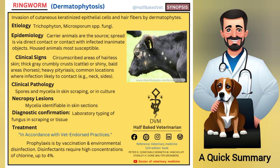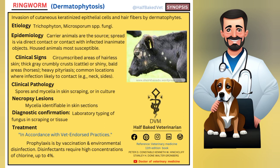Let's discuss a quick summary of ringworm, which is also called dermatophytosis in animals. It is the invasion of cutaneous keratinized epithelial cells and hair fibers by dermatophytes, the causative agent. This includes Trichophyton and Microsporum species fungi.